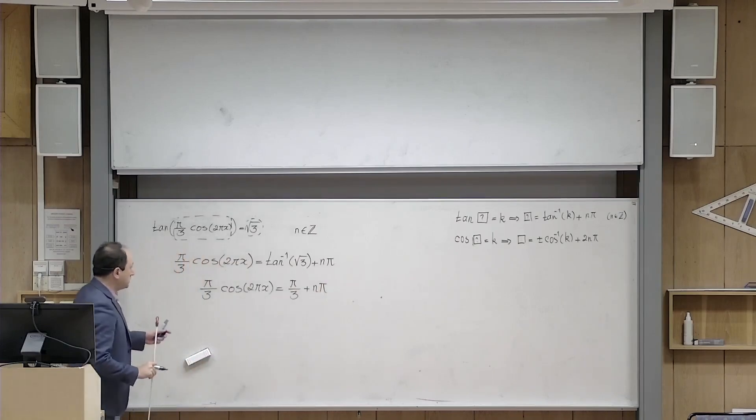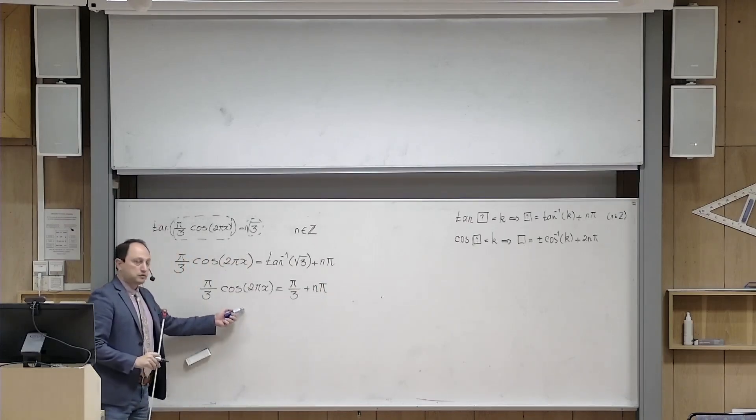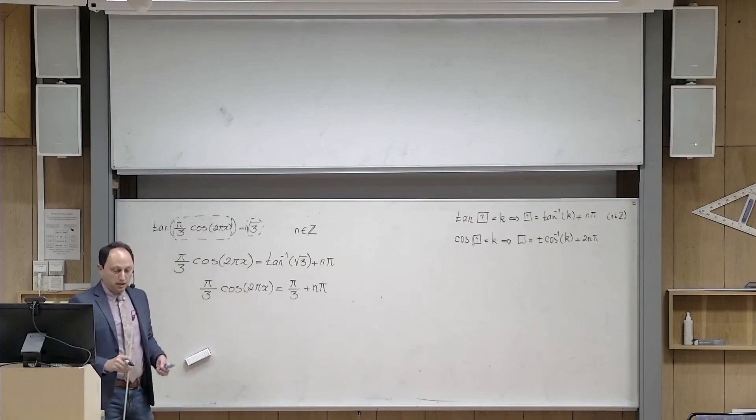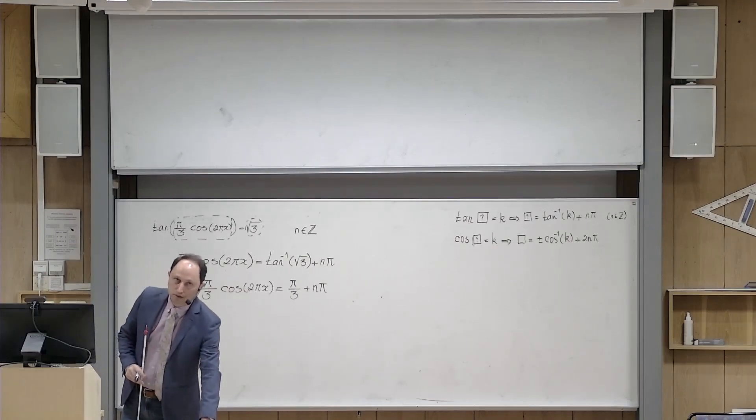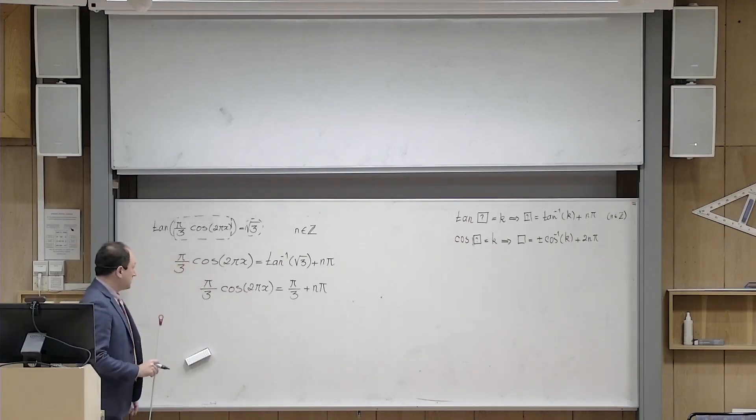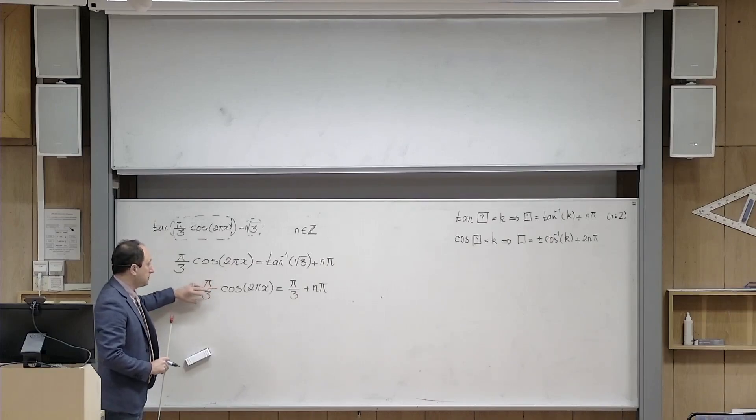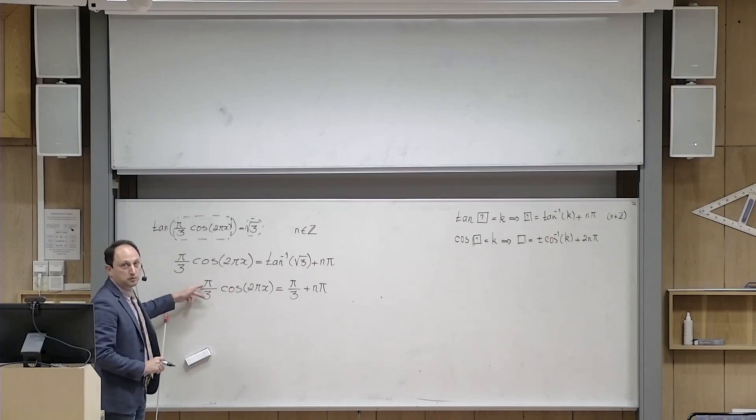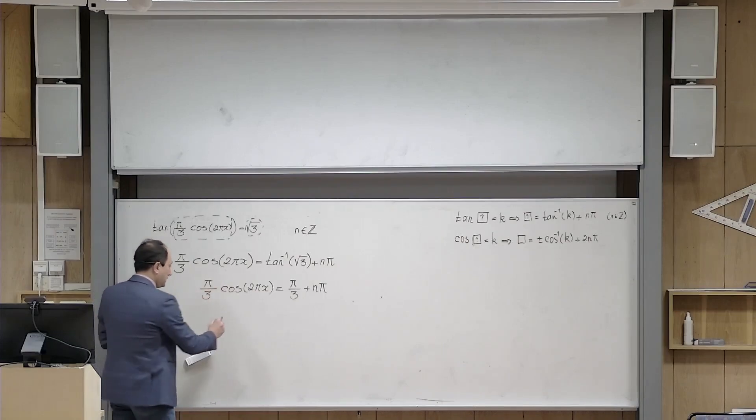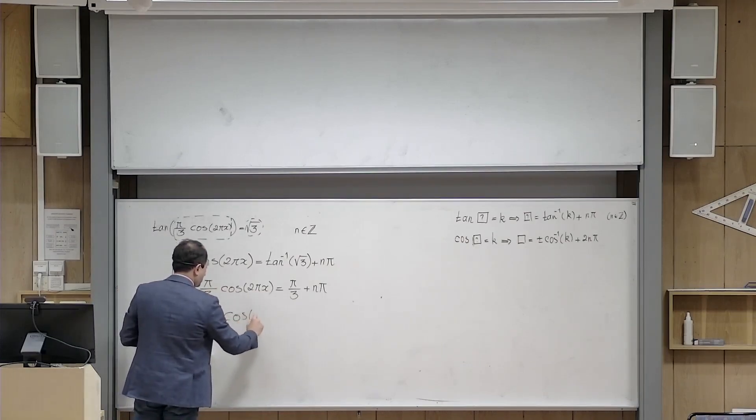You know that the goal of your equation is to find x, so you have to make x alone on one side. Motivated by that, first of all, I want to get rid of this factor of pi over 3. So what I do, I multiply everything on both sides by the reciprocal of this number, meaning 3 over pi. If I multiply everything by 3 over pi, this will be cancelled, and I will get cosine 2 pi x.